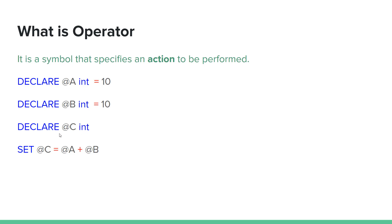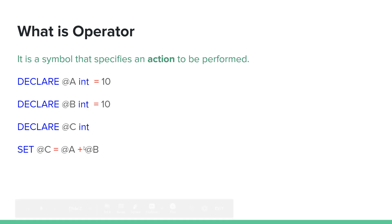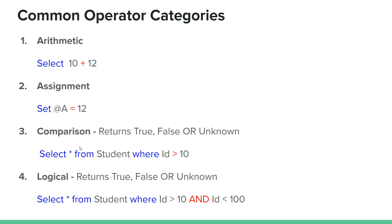Declare variable C. Using a SET statement, we assign a value to variable C using the assignment operator — the equals sign is used to assign. The action is performed using this operator. Now let's look at the basic operator categories.